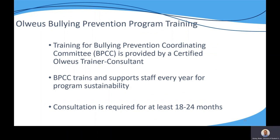Training is essential for successful implementation of the OVEAS program. A certified OVEAS trainer can provide training for the school committee as well as provide ongoing consultation. Once trained, the Bullying Prevention Coordinating Committee will train the entire staff each year. A trainer will be assigned to your school and is required to work with your school for a minimum of 18 to 24 months, but can be available beyond that if needed.